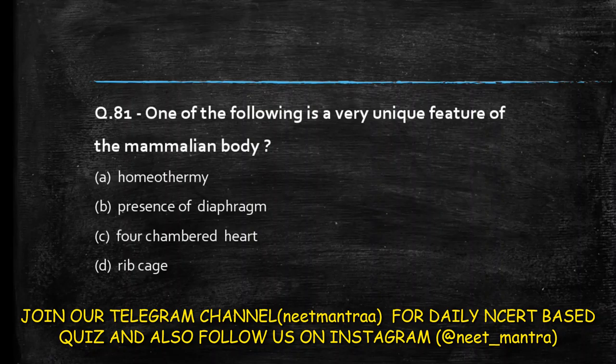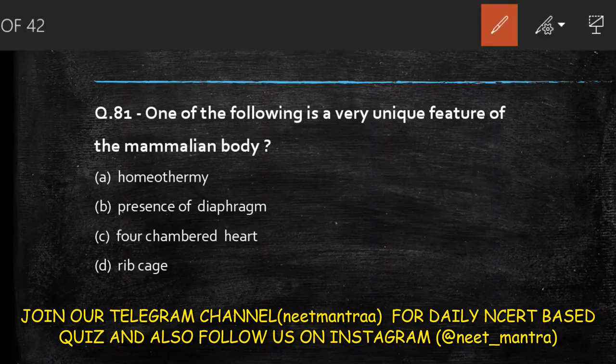Next question: which one of the following is a very unique feature of the mammalian body? Options are homeothermy, presence of diaphragm, four-chambered heart, rib cage. Homeothermy involves temperature regulation. Four-chambered heart and rib cage are not exclusive to mammals. The diaphragm is an exclusive and unique feature of mammals. So the answer is option B: presence of diaphragm.